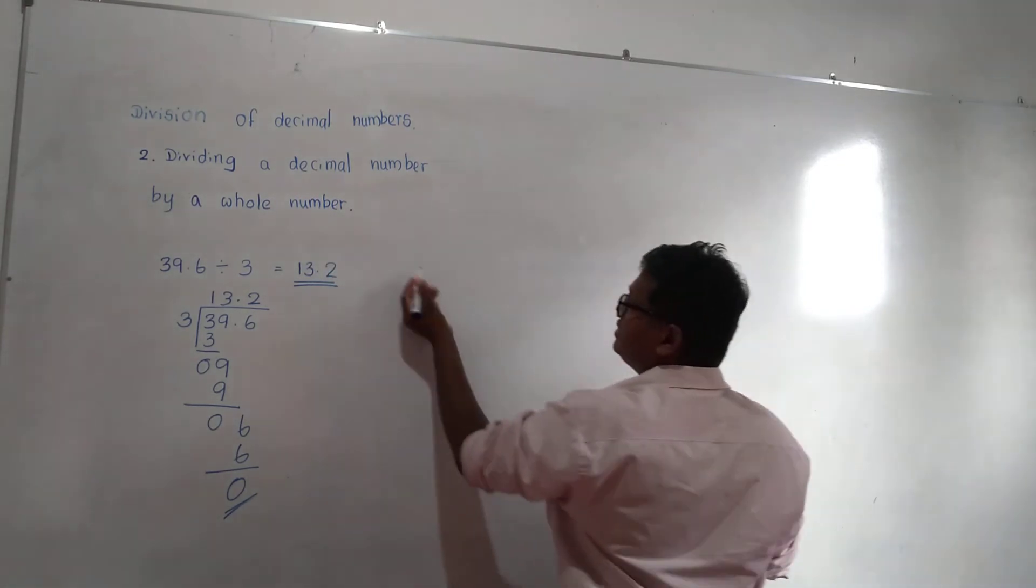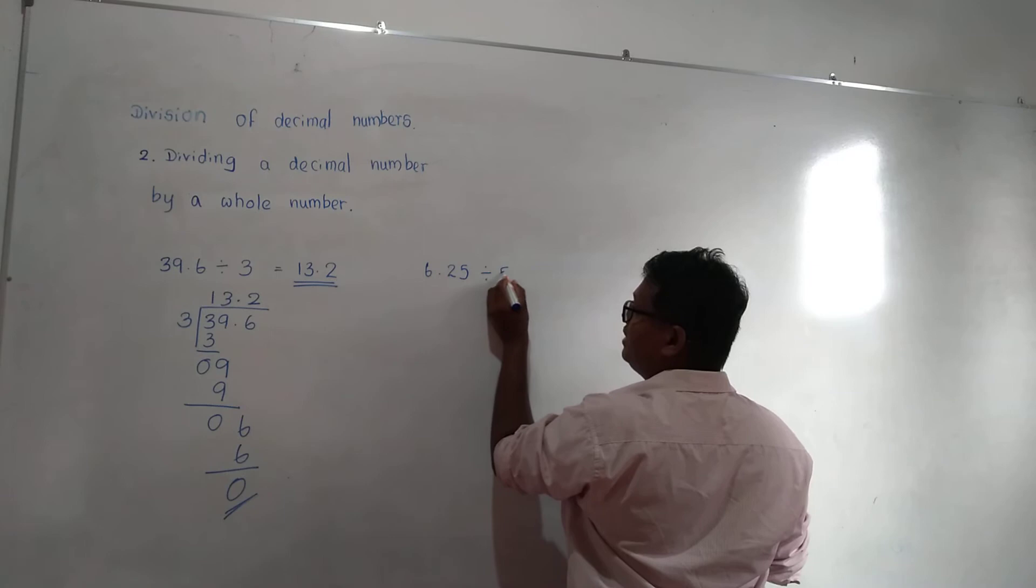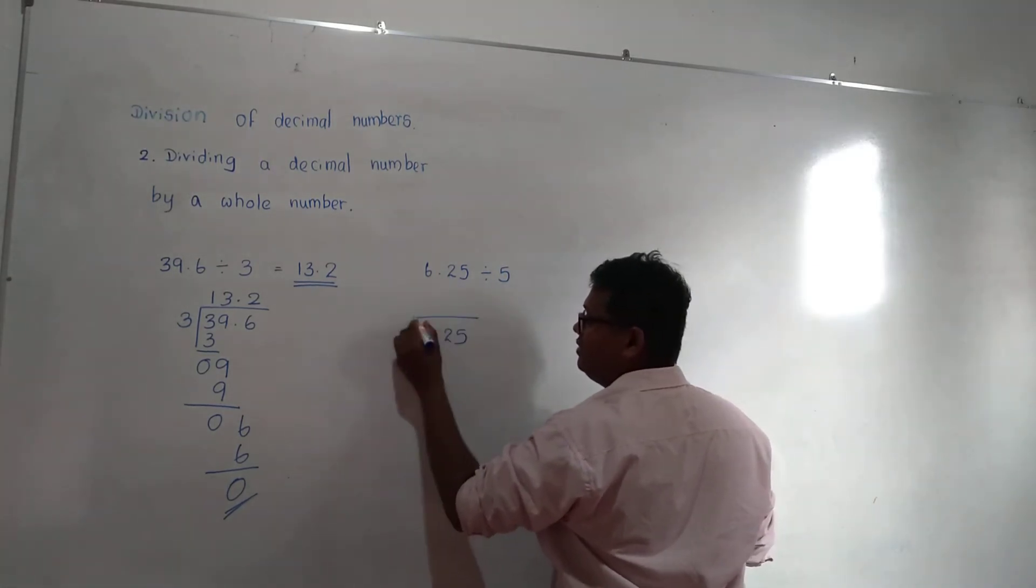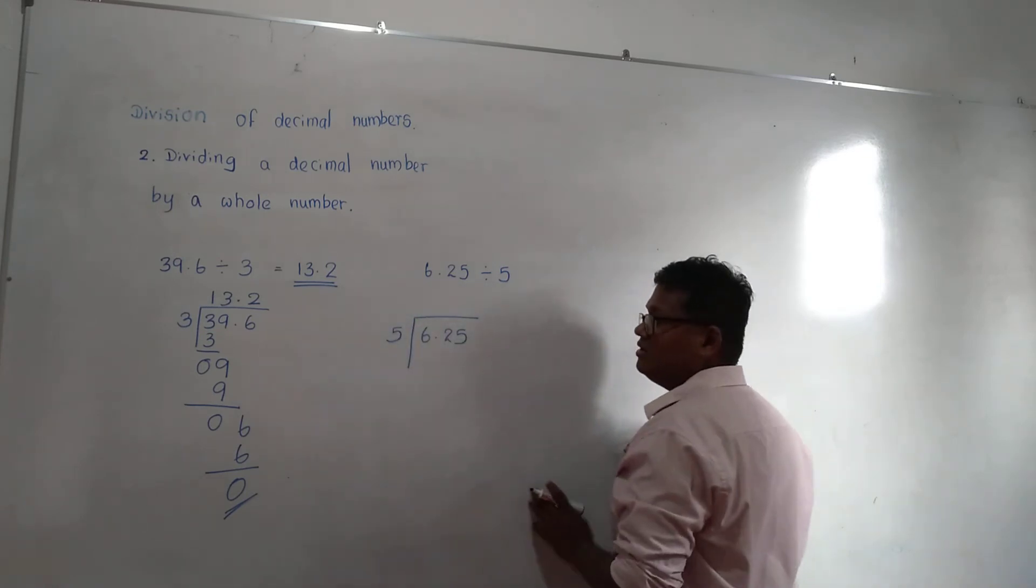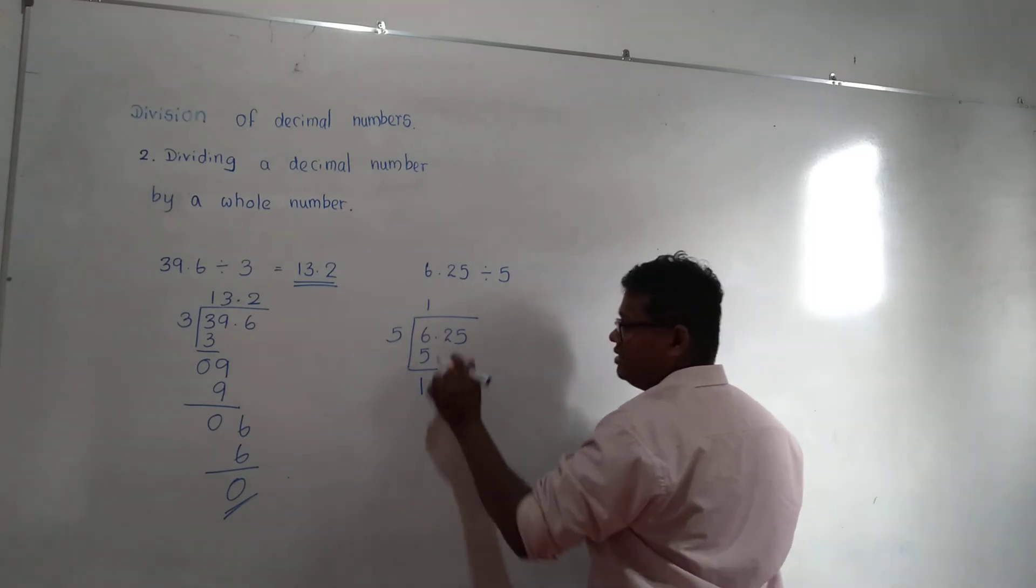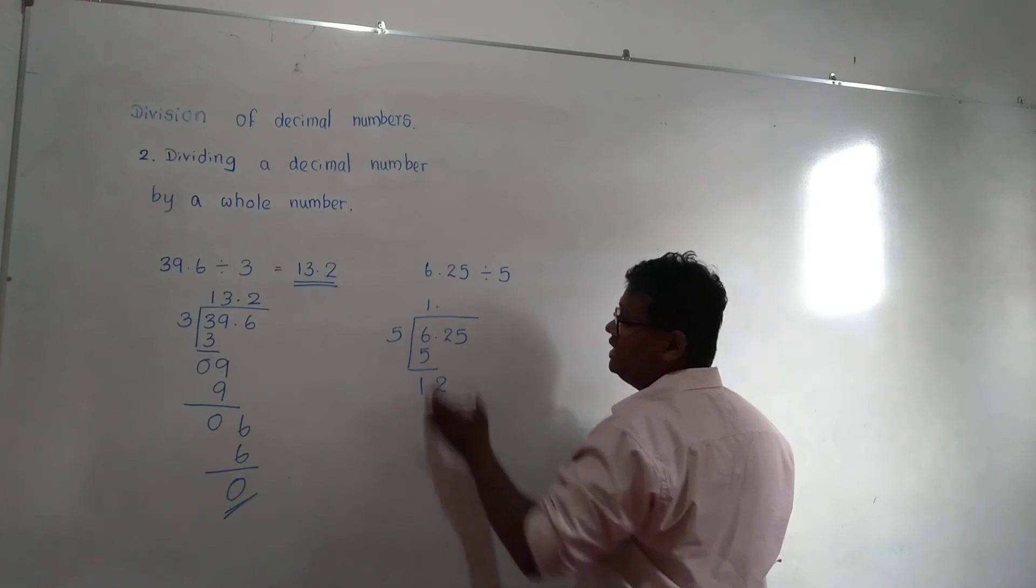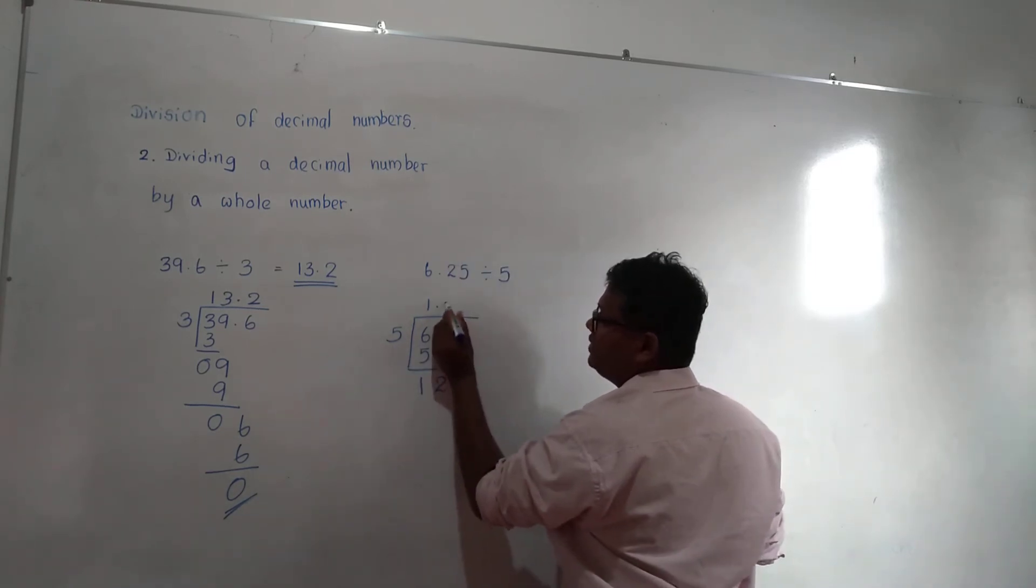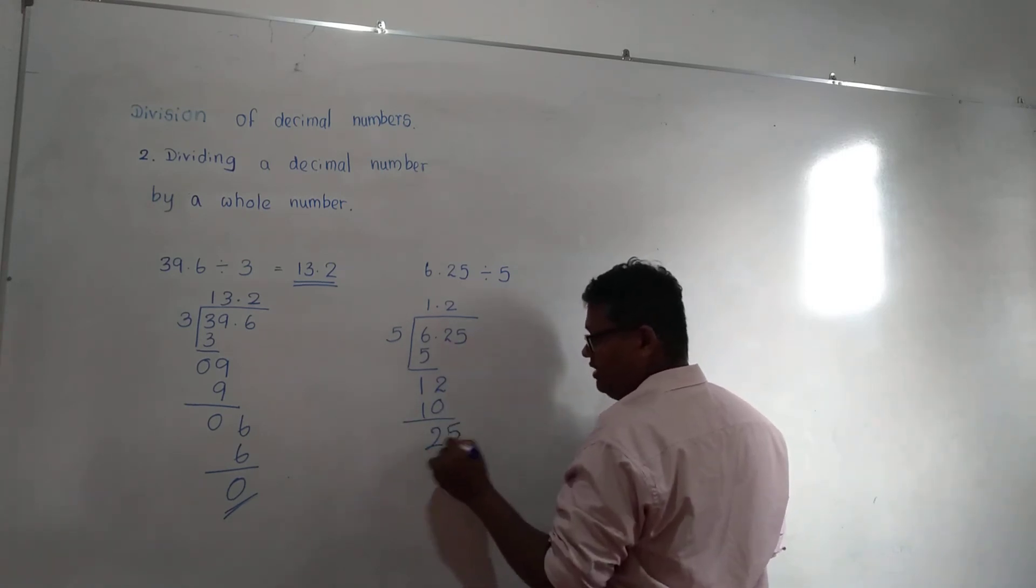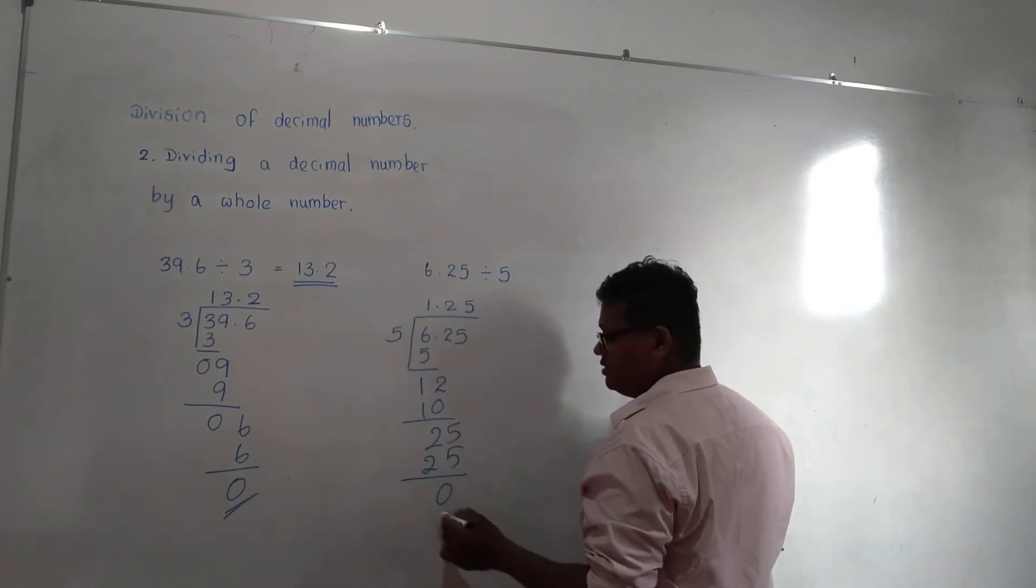Then 6.25 divided by 5. 5 times 1 is 5. 6 minus 5 is 1. Get this 2. Decimal place above the decimal point. 12: 5 times 2 is 10, remainder 2. Get this 5: 25, 5 times 5 is 25, remainder 0.